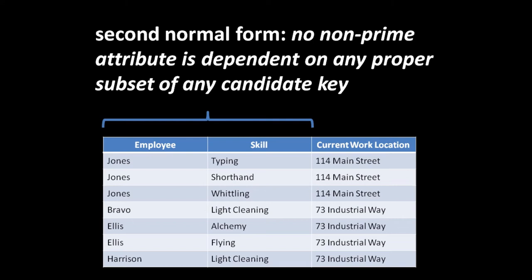A proper subset is a subset which is not equal to the thing it's a subset of. Our candidate key here is employee and skill together; the two proper subsets are the employee column by itself and the skill column by itself. A prime attribute is a column which is part of a candidate key - so current work location is a non-prime attribute because it doesn't belong to any candidate key. To ask if this table conforms to the second normal form, we ask: is current work location dependent upon either the skill column or the employee column? The answer is that current work location is dependent upon employee.